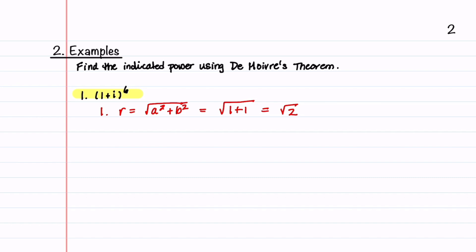Our second step is to find theta. We notice that 1 plus i is in quadrant 1, so theta equals the inverse tan of b divided by a. This equals the inverse tan of 1, and since the tangent of pi over 4 is 1, our angle theta equals pi over 4.